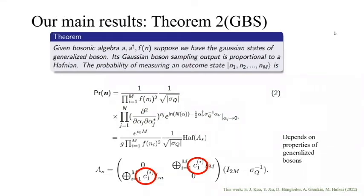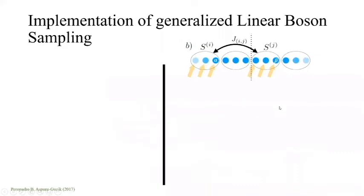We've discussed linear boson sampling for generalized bosons and also Gaussian boson sampling for generalized bosons. Next we should talk about how to do the implementation.